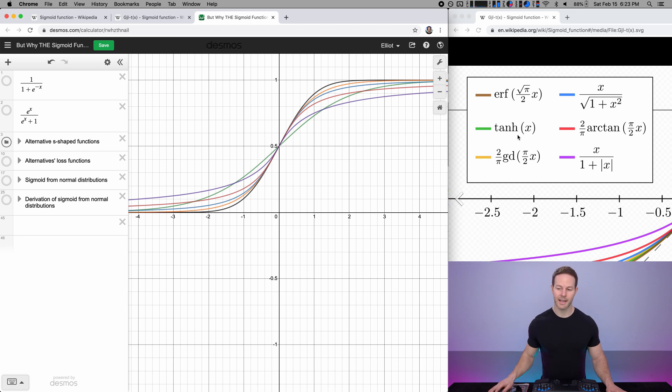the tanh function is actually the exact same as the sigmoid function, it's just rescaled and shifted. So in this graph, this green function is the sigmoid function. And if we look at the other functions, they look like they would work similarly just as well, mapping numbers on the number line into the output of zero to one.